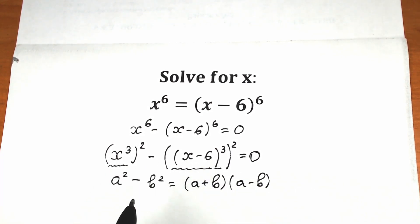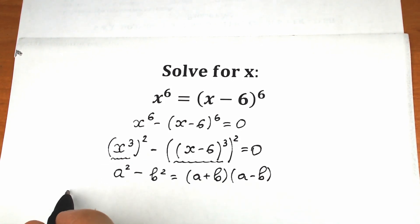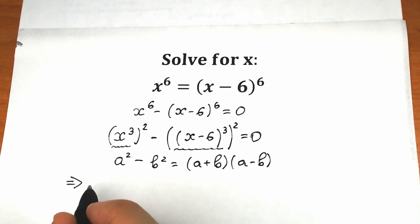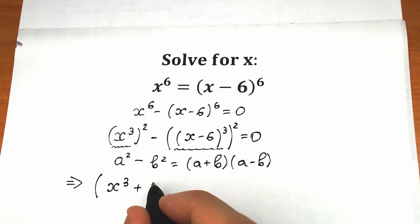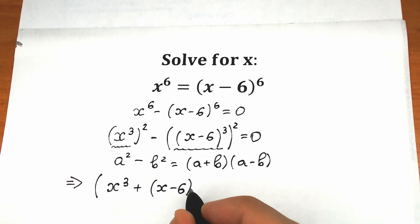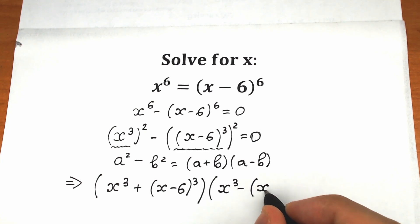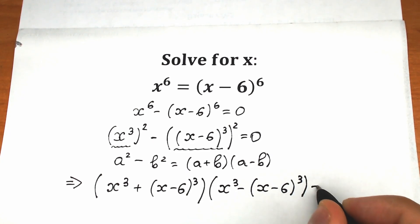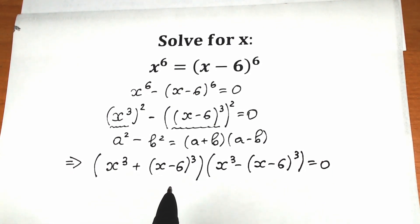Applying the difference of squares formula, we get two parentheses: the first is x cubed plus x minus six, raised to the cube, and the second is x cubed minus x minus six, raised to the cube, all equal to zero. We have a product of two parentheses equal to zero, which means the first parenthesis equals zero or the second parenthesis equals zero.